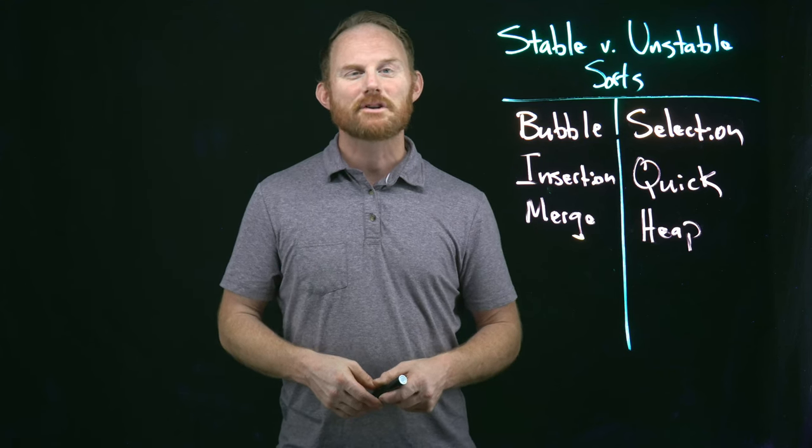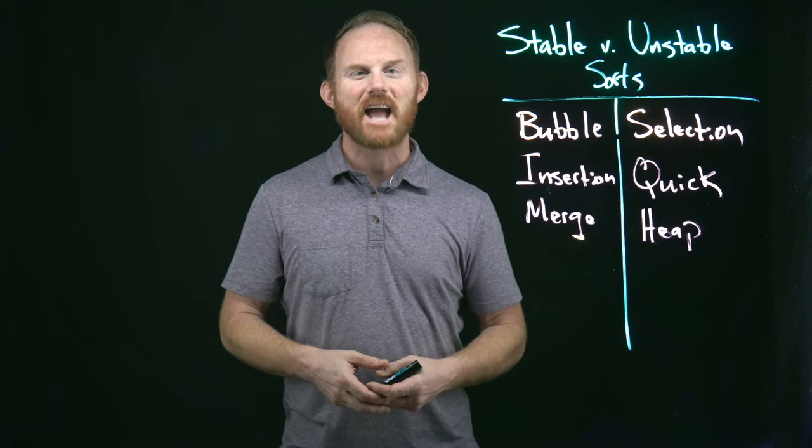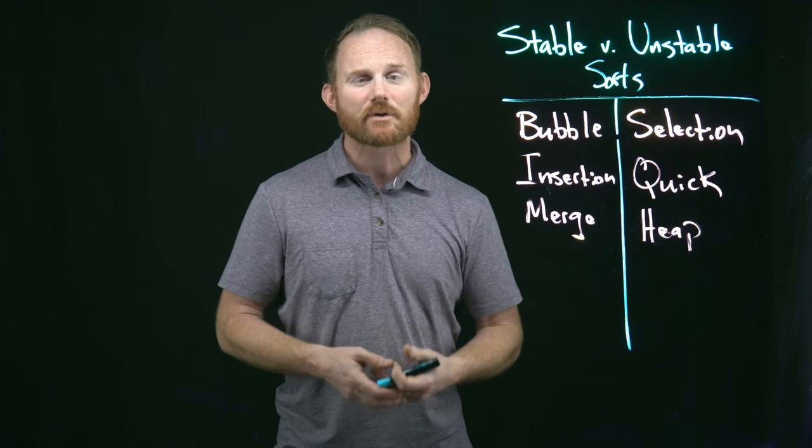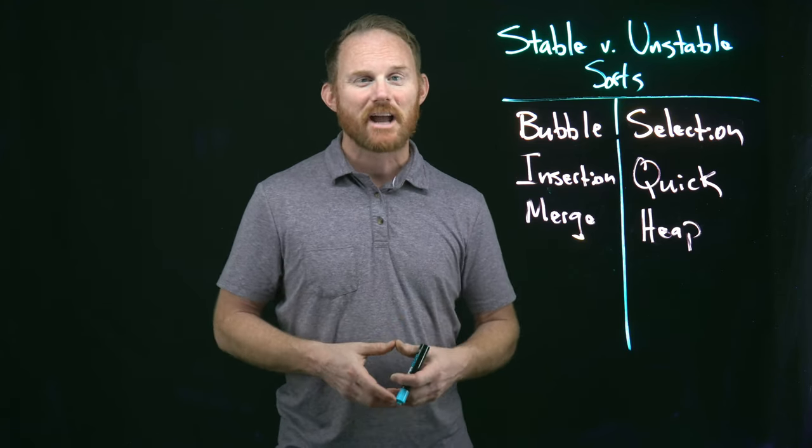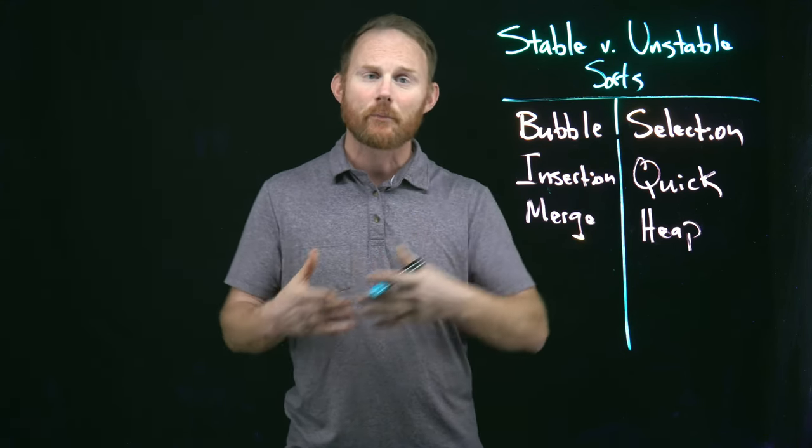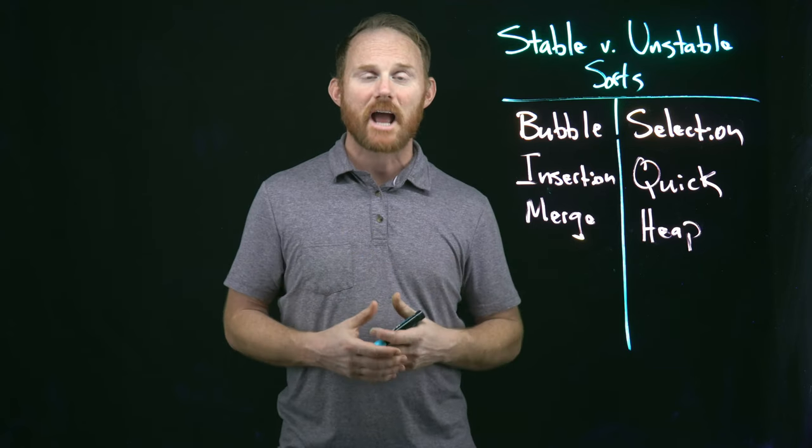Good morning, developers. If you are new to the channel, my name is Rob and it is CS Thursday, the day we push our keyboards off to the side and look at some computer science topic that will keep us sharp as developers. We've got a pretty short one today. We're going to look at the difference between a stable and an unstable sorting algorithm.